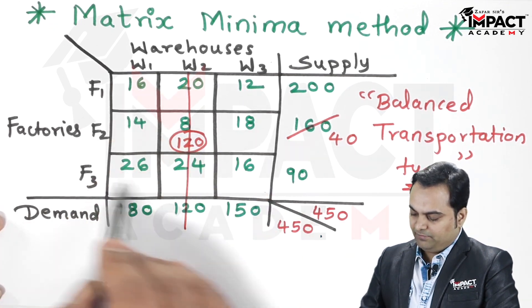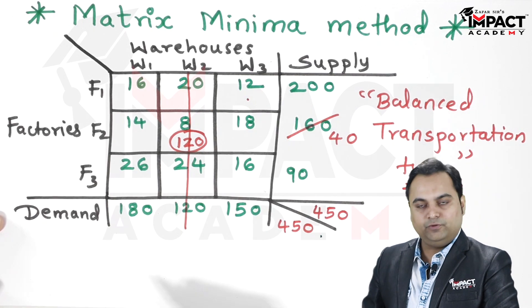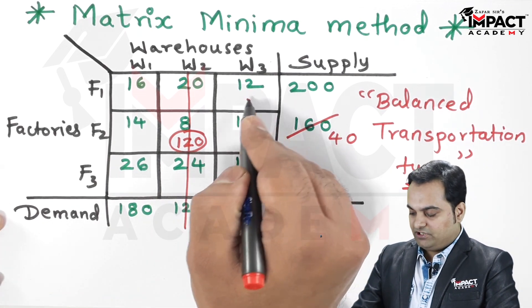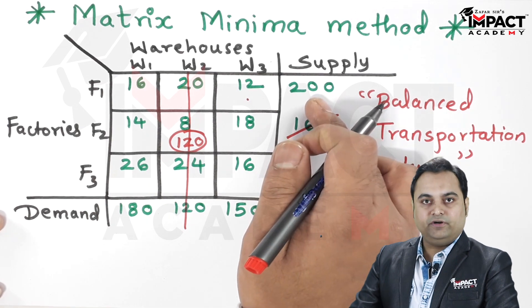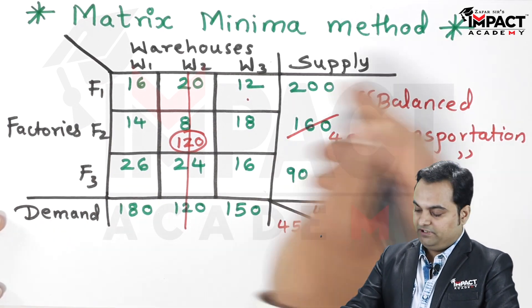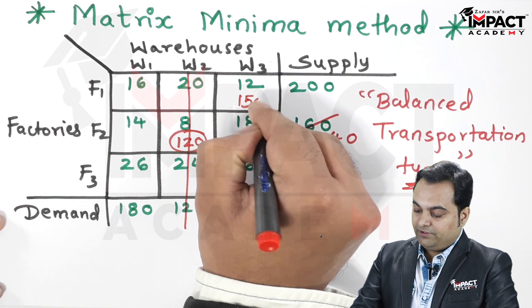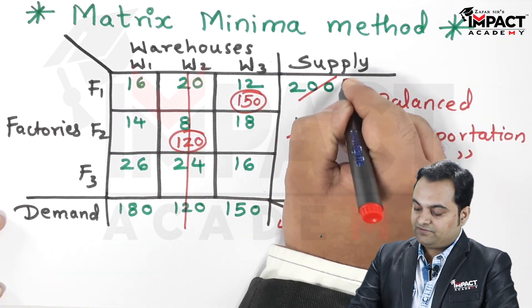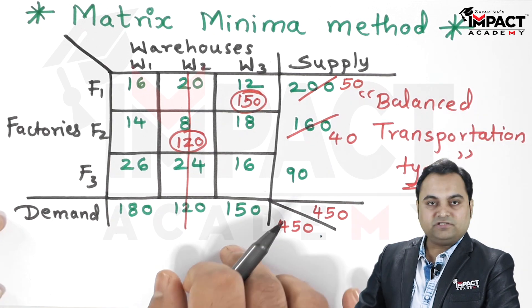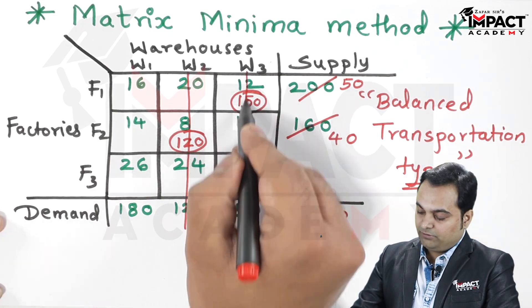Next, whatever remains out of that, select the minimum value. When I look at the remaining values, 12 is the minimum value. For this cell, the demand is 150 and supply is 200, so the demand can be completely met. I am writing 150 here.